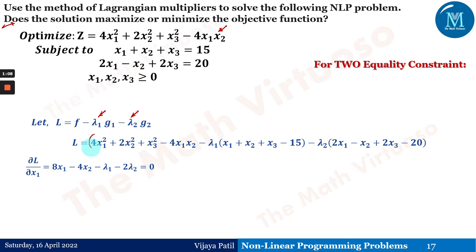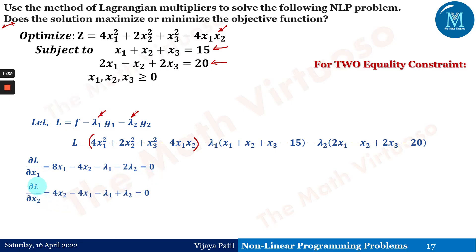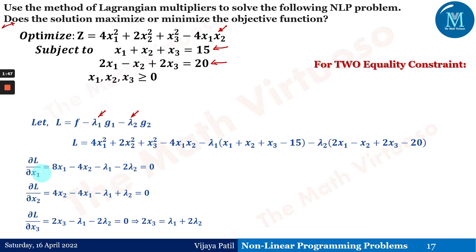Observing the Lagrangian: this is f, minus λ1 times g1, minus λ2 times g2. Here g1 is the first constraint and g2 is the second constraint, with the RHS taken to the LHS side. So ∂L/∂x1 comes out to be 8x1 − 4x2 − λ1 − 2λ2 = 0. Please pause the video and try to get ∂L/∂x1, ∂L/∂x2, ∂L/∂x3 yourself.